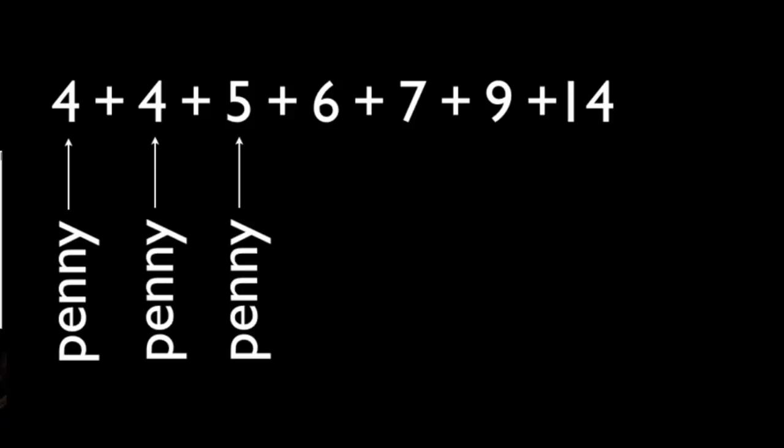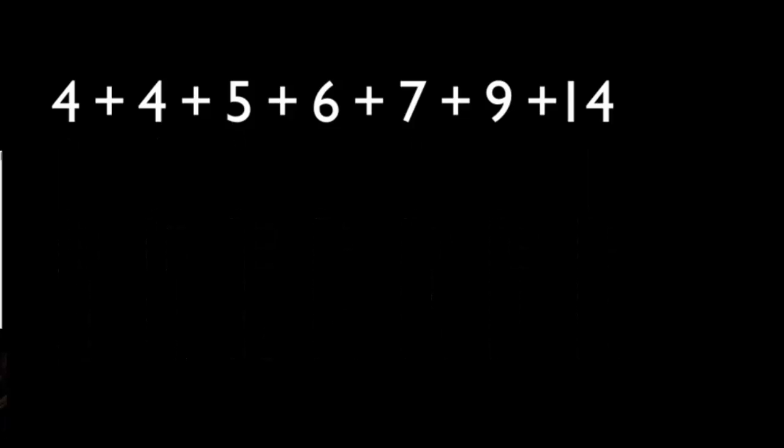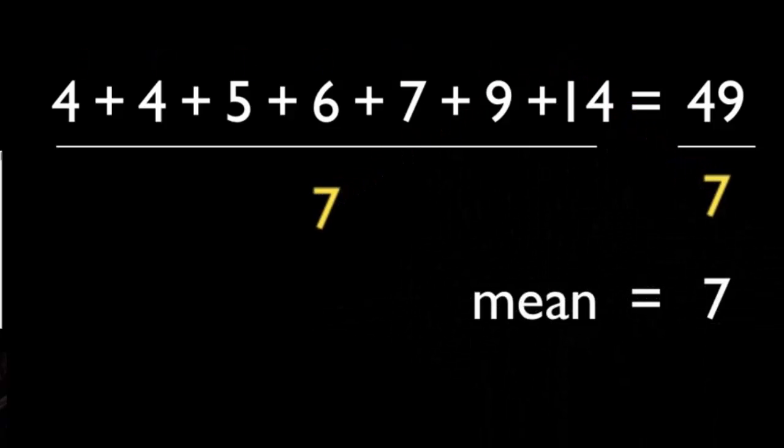Basically, a lot of kids get frustrated with finding the mean because it's a long process, especially if there's a large data set. So I say it's a mean because it makes you go to work. You have to add up every penny, and then I just make them think of each number as a penny or an amount of pennies. Then they have to divide it by how many, so divide it by how many pennies or numbers there are.